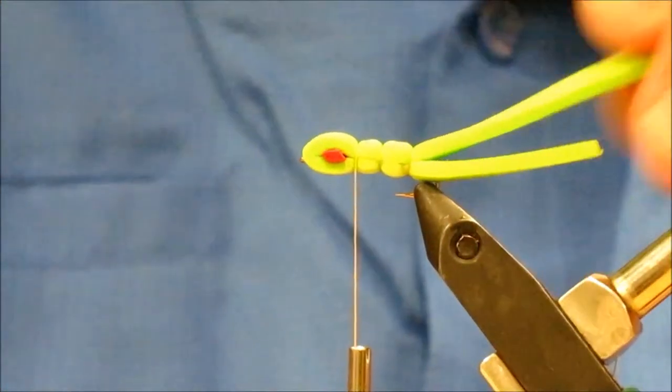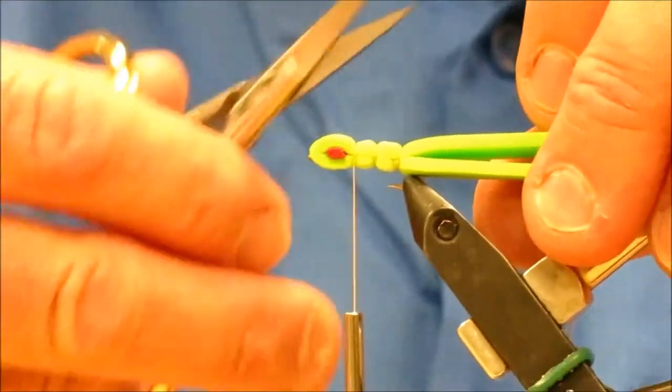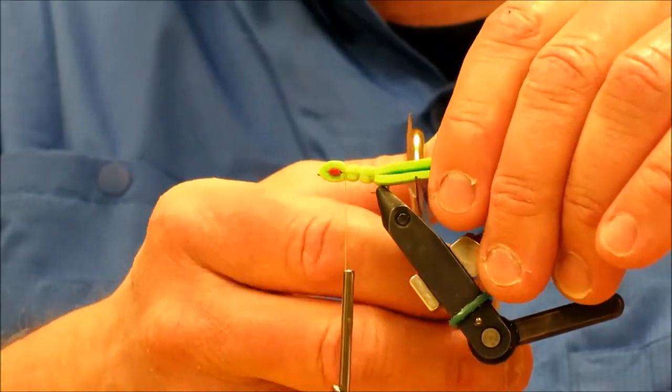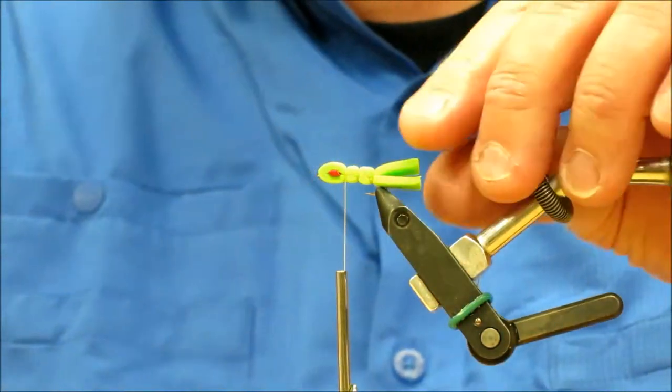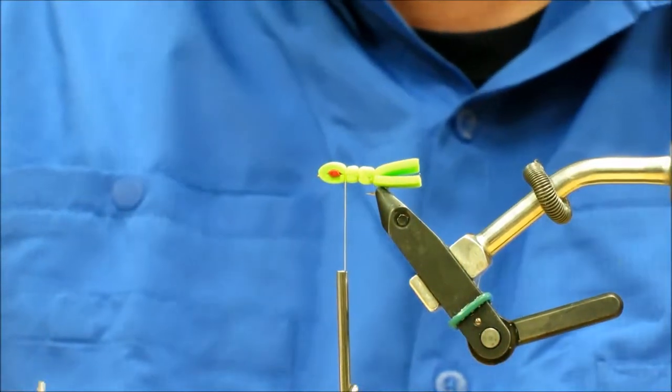Then I just keep progressing all the way up until I get up where my head's going to be. Make a couple wraps there. Now all my wraps are hidden on top. Now for the back part, you can cut it at some different angles if you want to make it look prettier, but I just cut it off straight.